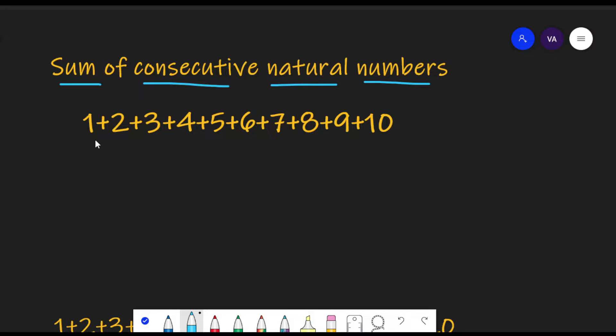Can you see that these extreme numbers 1 and 10 add up to 11? Then the inner extreme numbers 2 and 9 also add up to 11. Then again this 3 and 8 also add up to 11. 4 and 7 add up to 11. 5 and 6 also add up to 11.